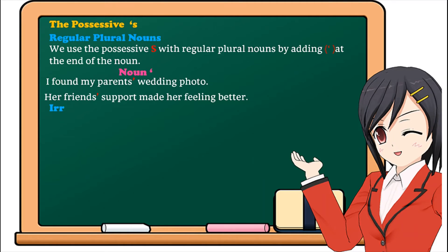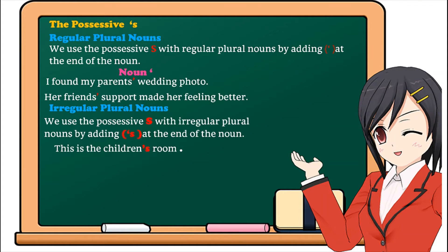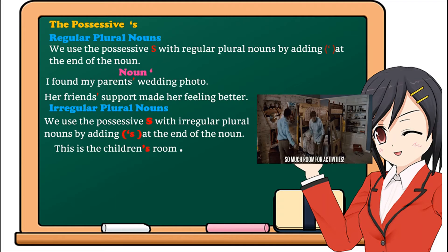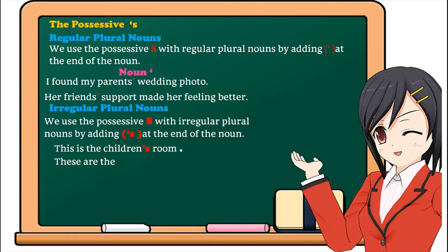With irregular plural nouns, we use the possessive S by adding apostrophe S at the end of the noun. For example, this is the children's room. Or these are the women's dresses.